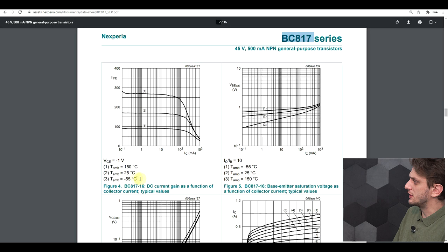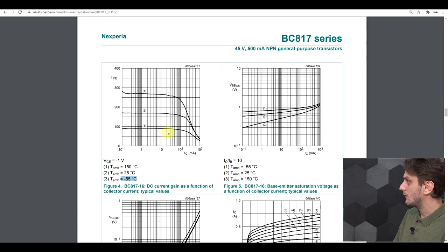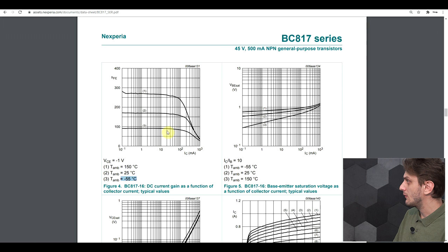If you look at the datasheet of the BC817 we can see that only if you drive the transistor at minus 55 degrees, so you have to be really cold for that, only then do you get a gain below 100. But in most cases at normal temperatures you will have a gain of more than a hundred at collector currents of up to 400 milliamps, so that should be plenty.